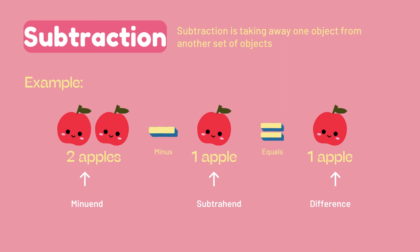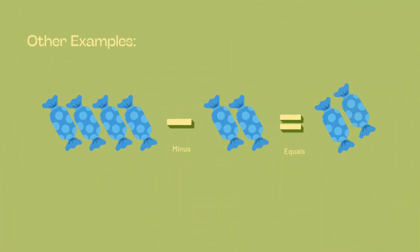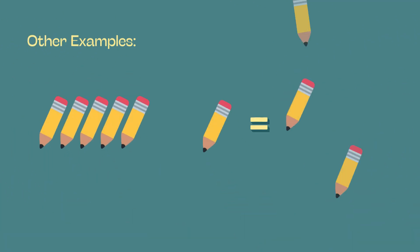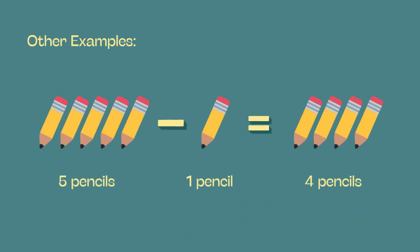For example, two apples minus one apple equals one apple. Another example: four candies minus two candies equals two candies. Here's another one: five pencils minus one pencil equals four pencils.